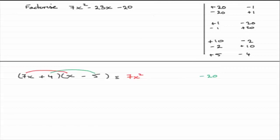Just check out the x terms now. 7x times minus 5, that's going to be minus 35x. And 4 times x is going to be plus 4x. So, this is giving us minus 31x.